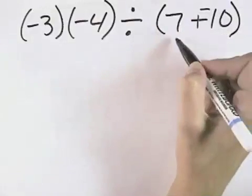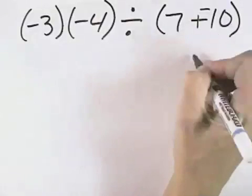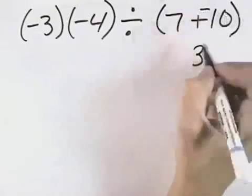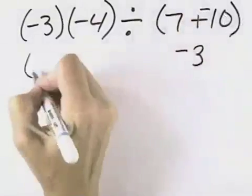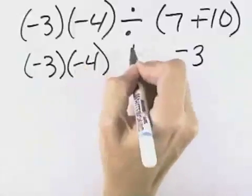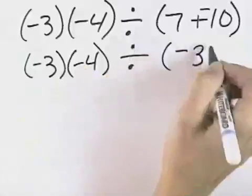Since they're opposite signs, we take the difference between those two numbers, which is 3. And because the 10 has the larger absolute value, we have a result of negative 3. So we have negative 3 times negative 4, and then we will be dividing by a negative 3.